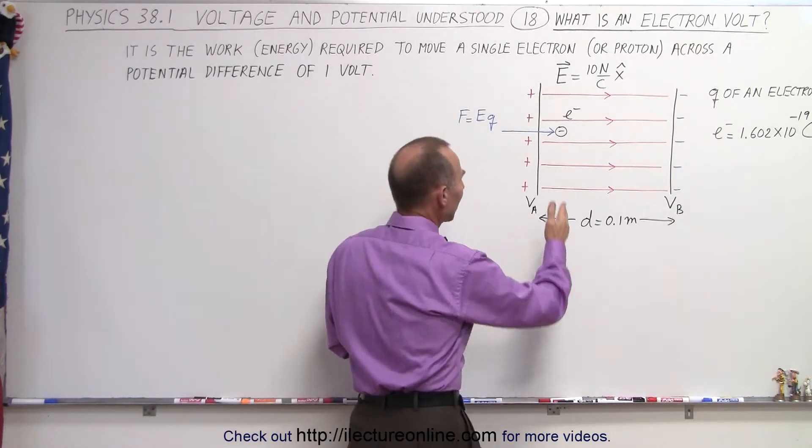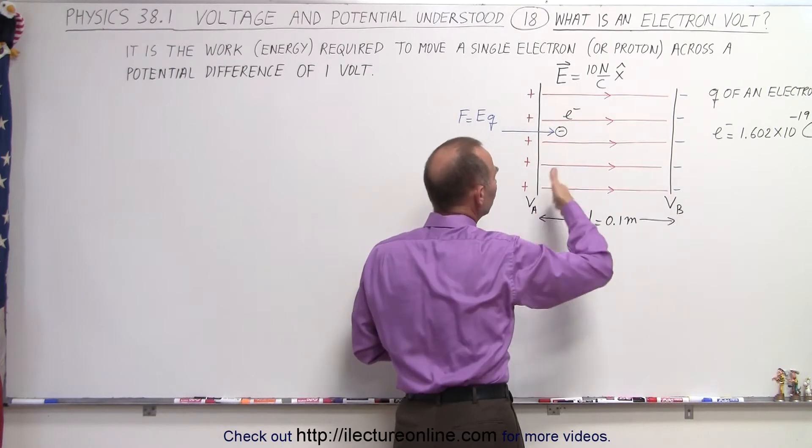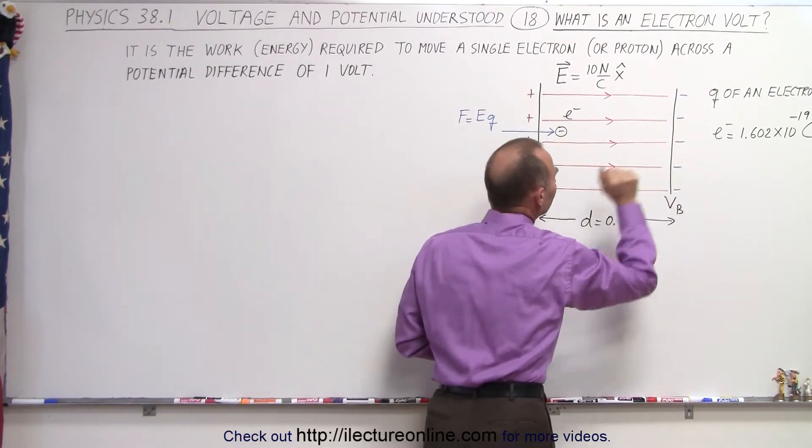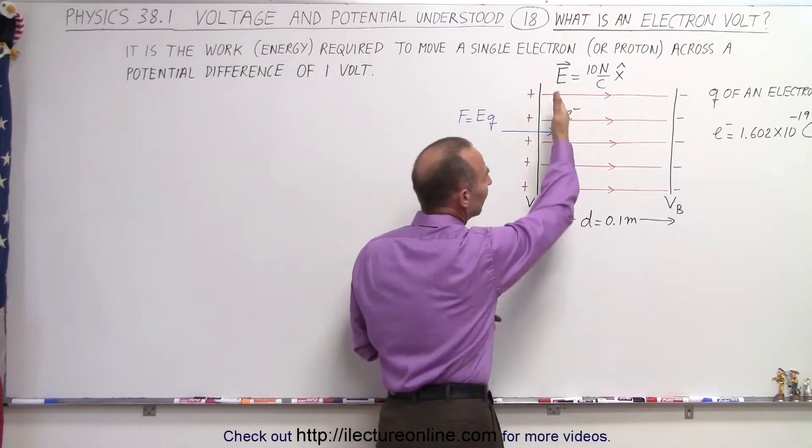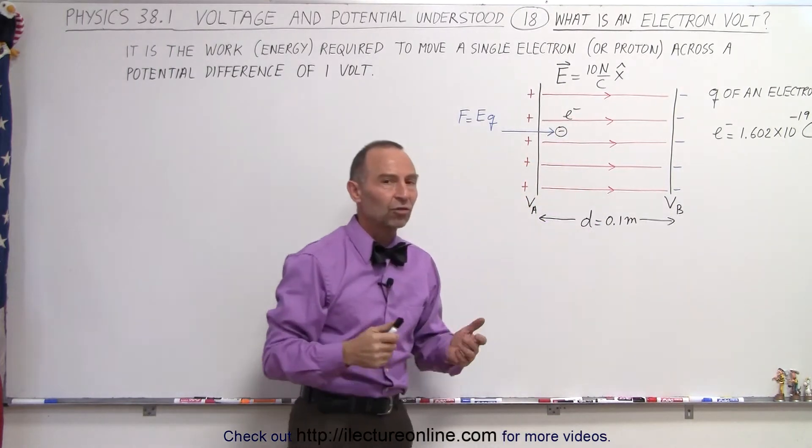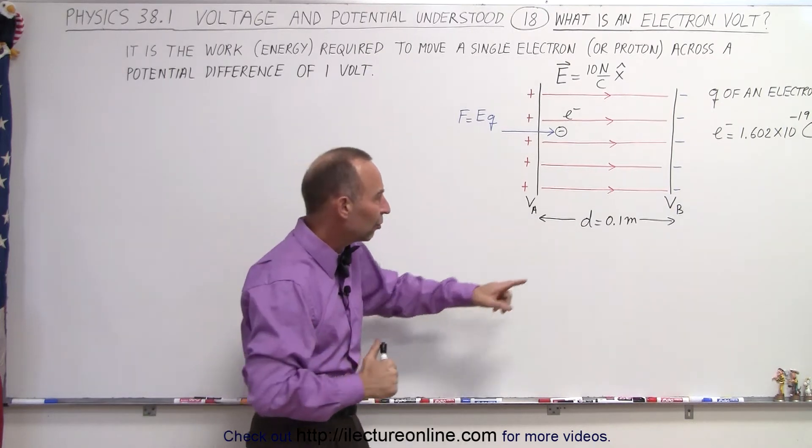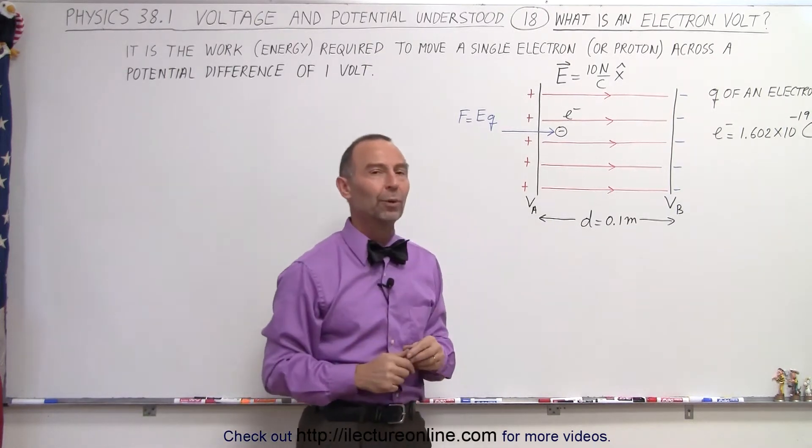So for example, if we have a region here between two metal plates that have additional charge on it, some positive charge here, some negative charge here, in such a way that the electric field here has a strength of 10 newtons per coulomb directed to the right. And let's say that the plates are a distance of 0.1 meter apart from one another.